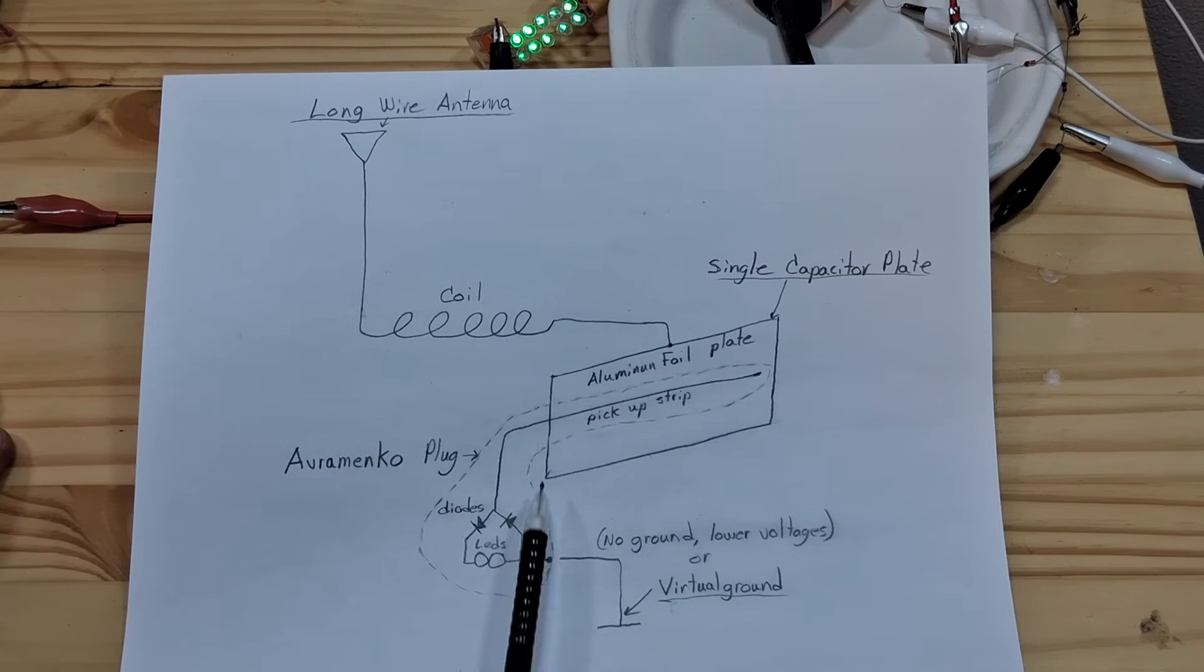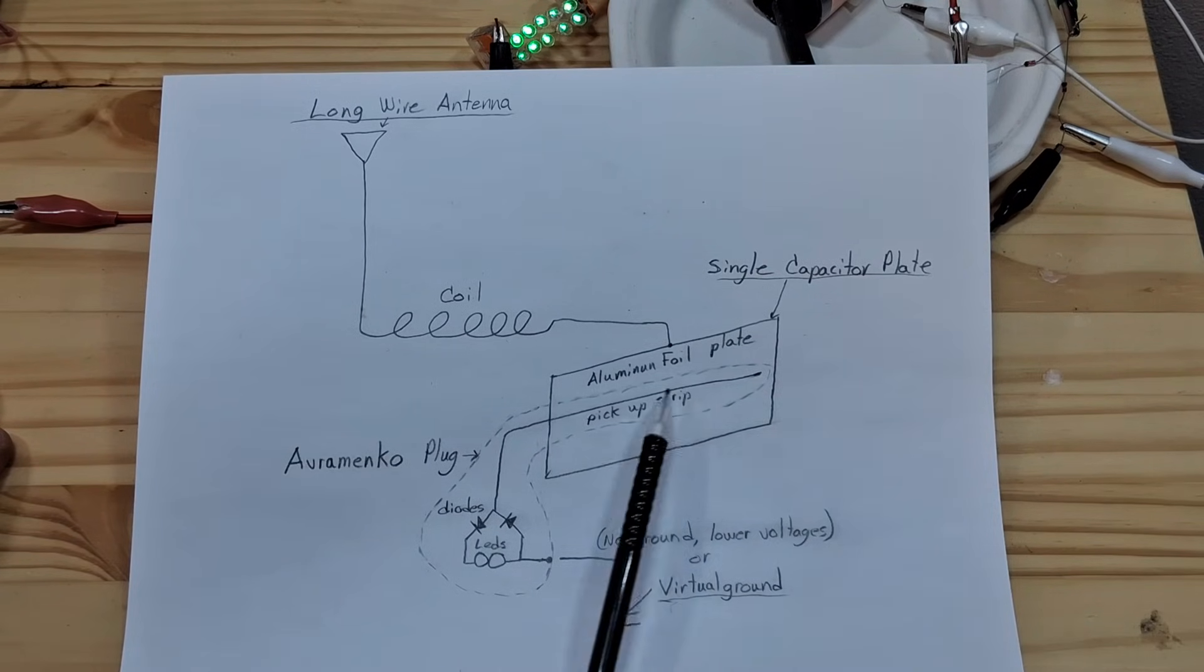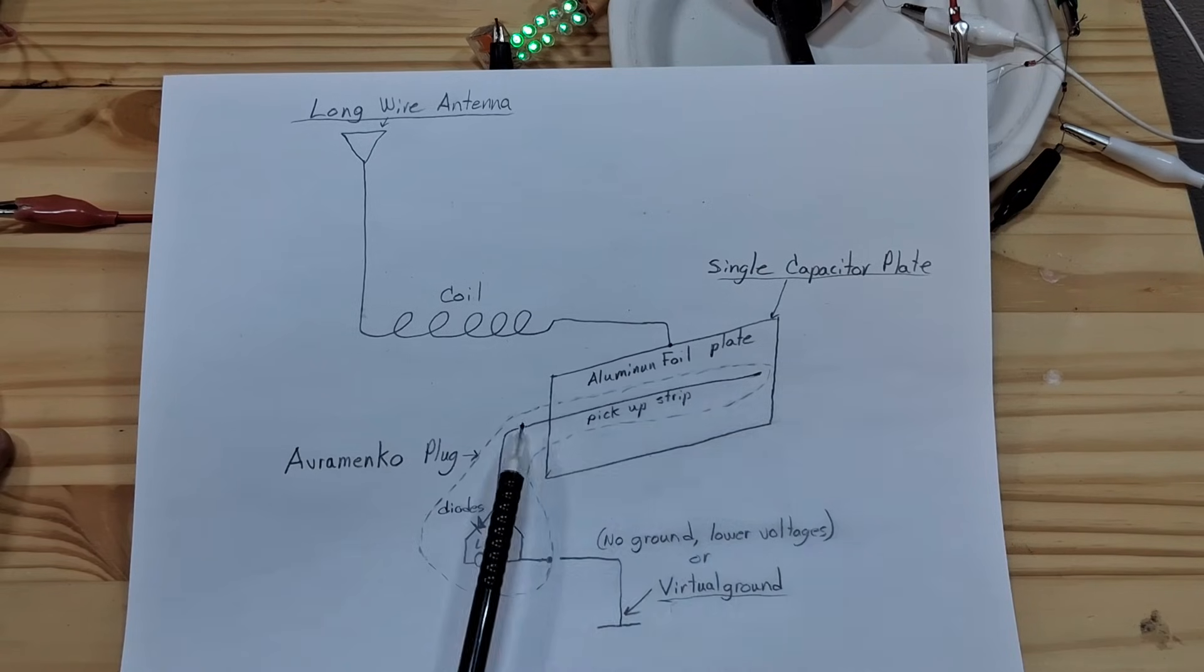Now this part of the circuit where I have this dotted line around is similar to what people call the Avramenko plug. They use that to detect high frequency radiation coming off of different objects, but this will just have like a longer probe.